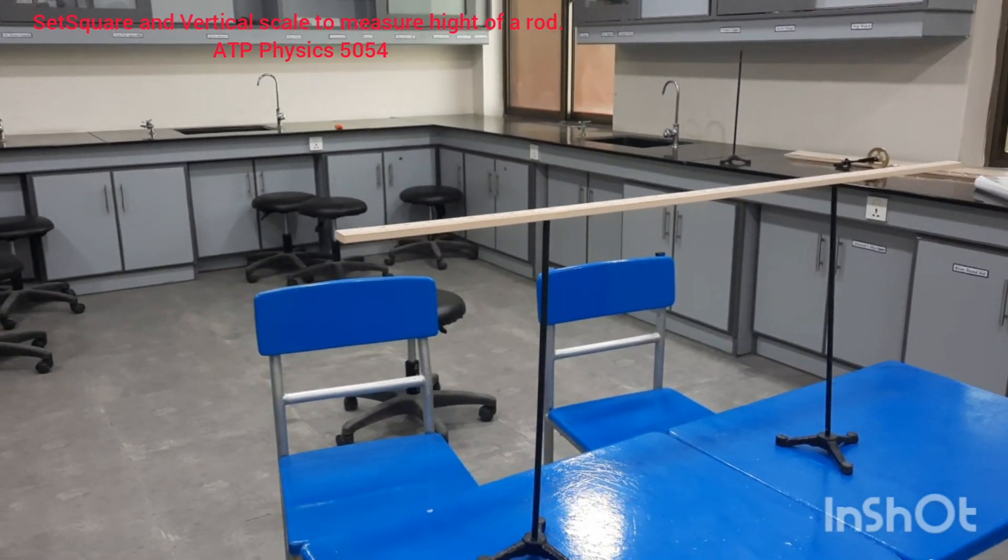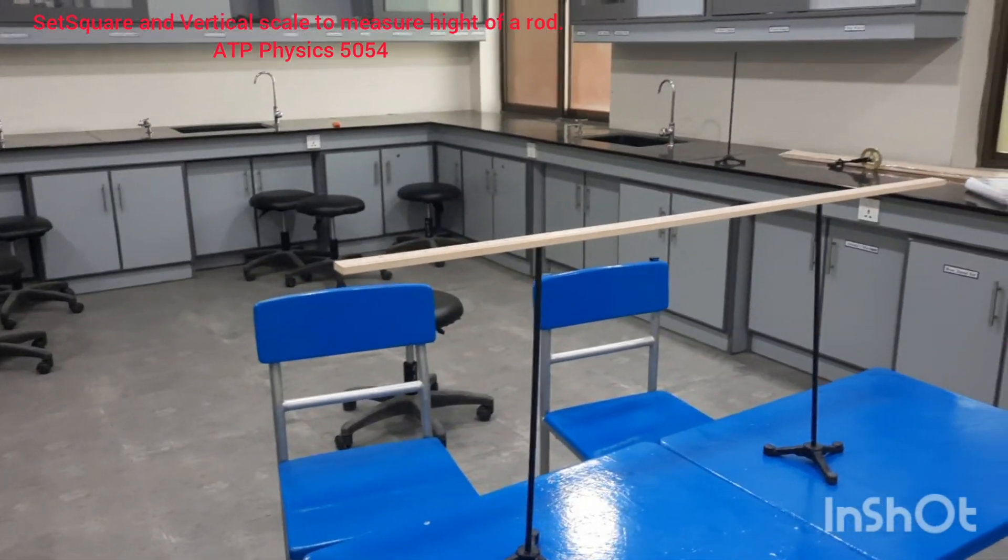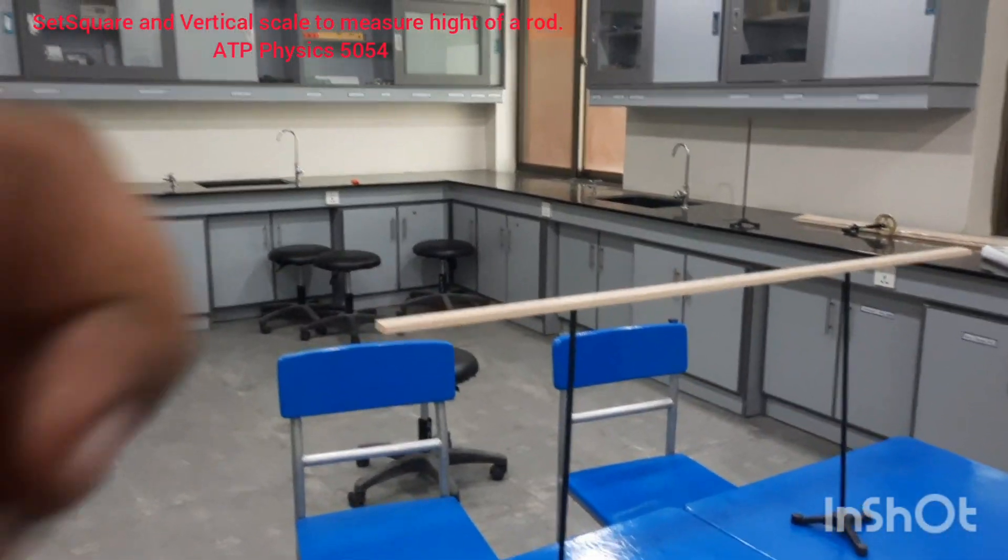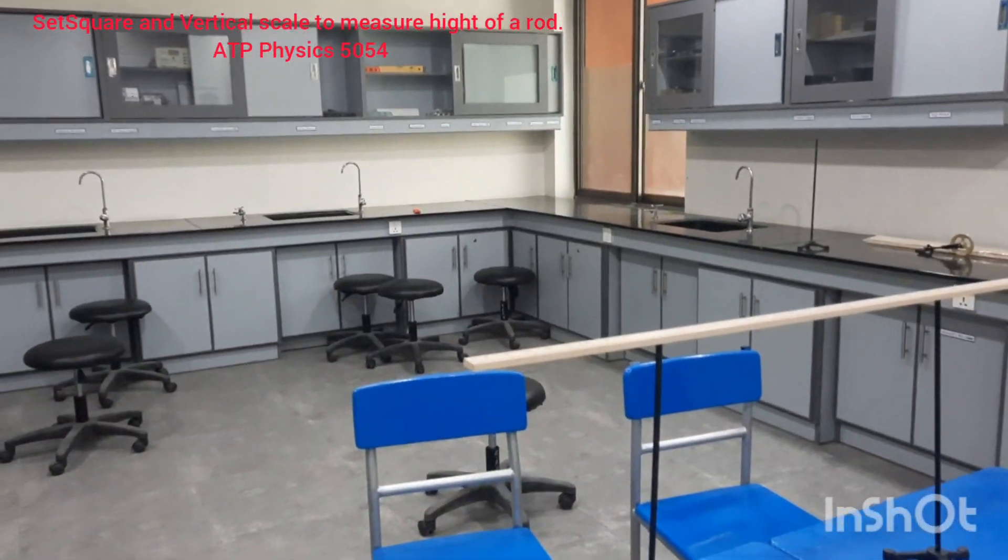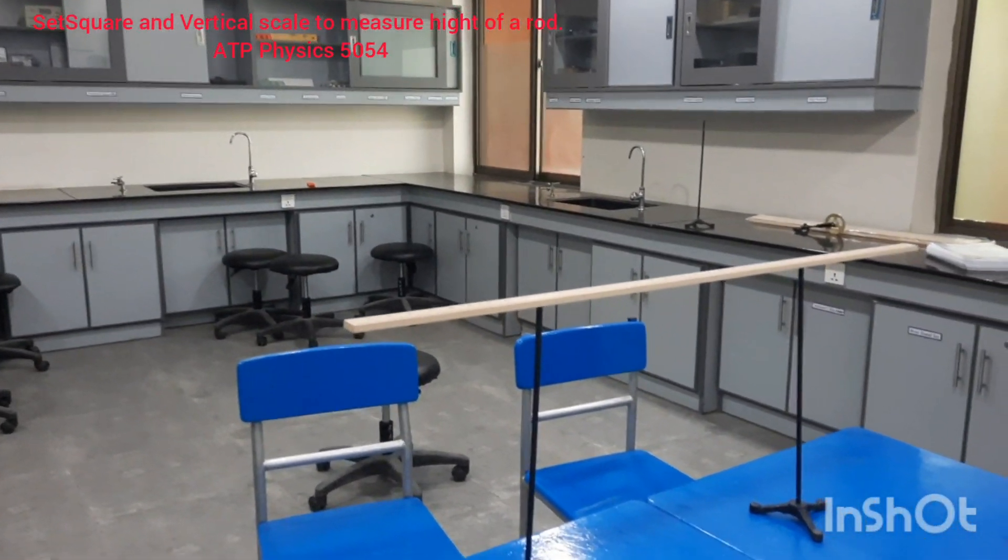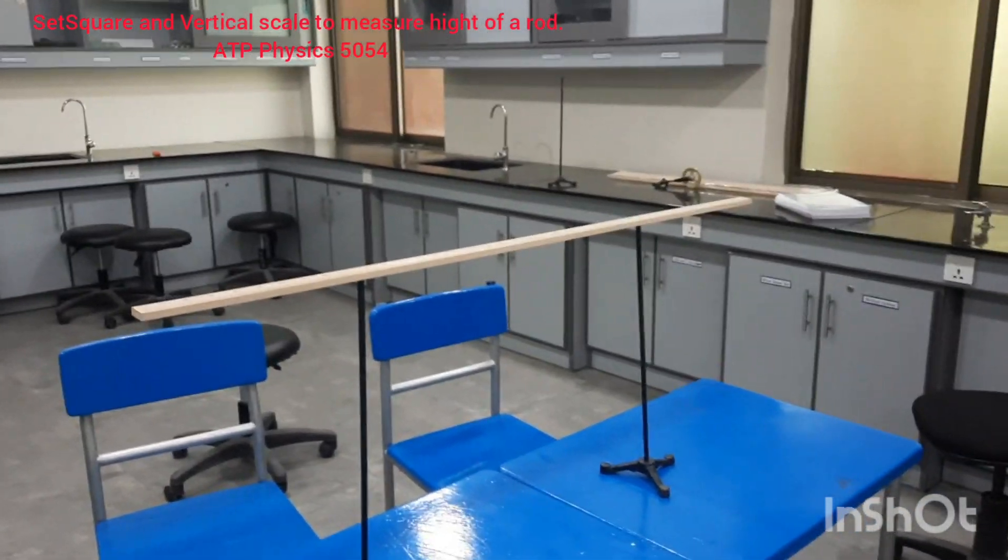The technique is very simple. I will check the height of the right end of this rod from the bench, and I will check the height of the left end of this rod from the bench. If both the heights are same, then it means that the rod is horizontal.